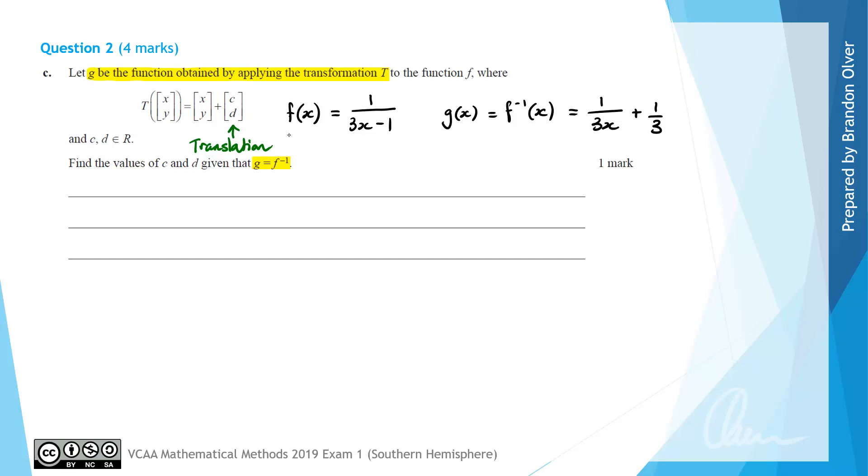We need to work out what translations occur to take f(x) to g(x). Some of you may see immediately that we'll need to translate this graph 1/3 units in the negative x direction and 1/3 units in the positive y direction. But for those who can't tell from the rule, I'm just going to sketch the two graphs quickly. On the left hand side of the two sets of axes I've drawn,